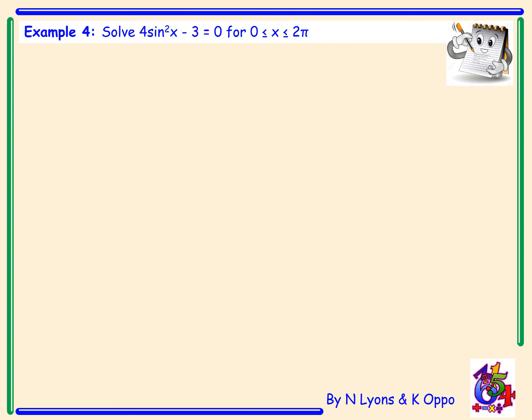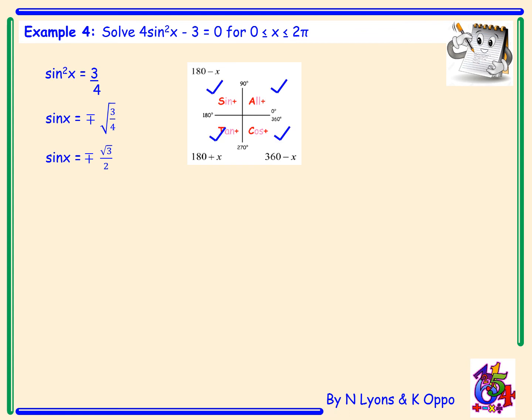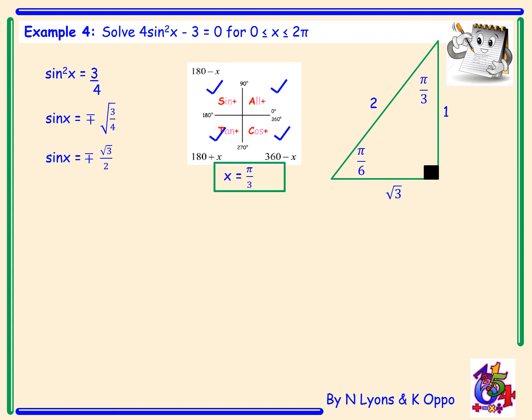Example 4. Solve 4sin²x − 3 = 0 for x lying between 0 and 2π. This is a quadratic trig equation in radians. Rearranging gives sin²x = 3/4. Taking the square root — remembering both positive and negative — gives sin x = ±√3/2. Since we have both signs, we're looking for an angle in each of the four quadrants. √3/2 is an exact value; drawing our exact value triangle with opposite √3 and hypotenuse 2 gives π/3.